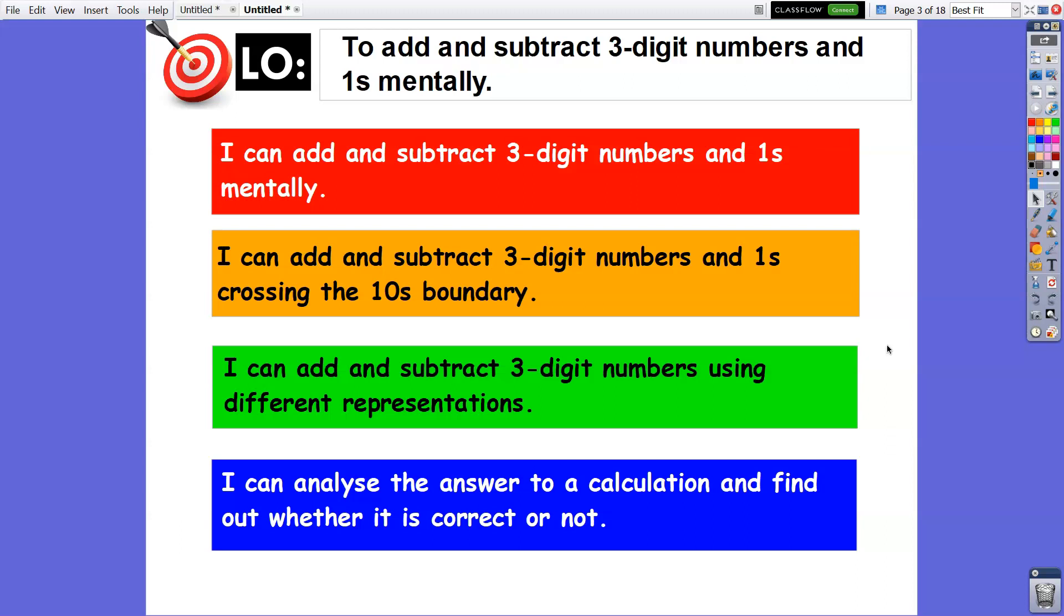Success criteria: I can add and subtract three-digit numbers and ones mentally. I can add and subtract three-digit numbers and ones crossing the tenth boundary. I can add and subtract three-digit numbers using different representations, and I can analyze the answer to a calculation and find out whether it is correct or not.